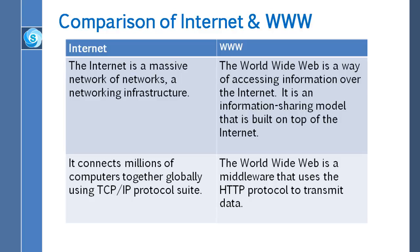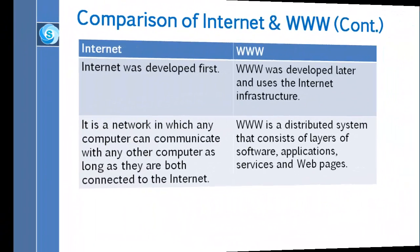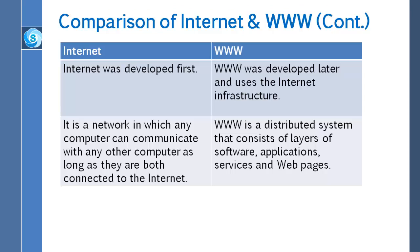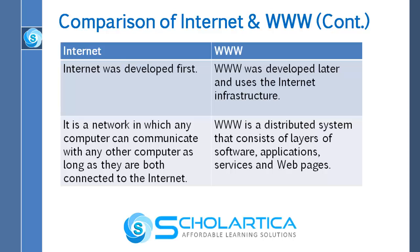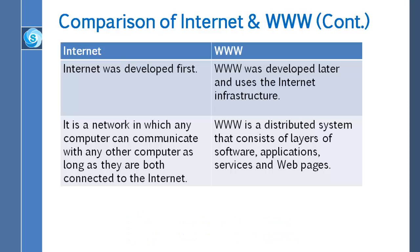The Internet connects millions of computers together globally using the TCP/IP protocol suite. The World Wide Web is a middleware that uses the HTTP protocol to transmit data. The Internet was developed first, and the World Wide Web was developed later and uses the Internet infrastructure. The Internet is a network in which any computer can communicate with any other computer as long as they are both connected to the Internet. The World Wide Web is a distributed system that consists of layers of software, applications, services and web pages.